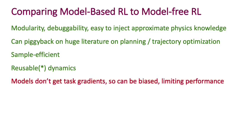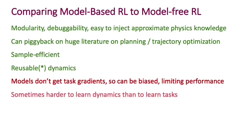Among the negatives of model-based RL: the models are trained independently of the task, so you don't directly get task gradients into the dynamics models, which can lead to biased models that limit performance. Also, sometimes it's actually harder to learn the dynamics than to learn the task. For example, if you're trying to learn to swim in a fast-flowing river, the dynamics of that river are probably harder to learn than how to move your hands — so it may not be worthwhile to learn the dynamics exactly.